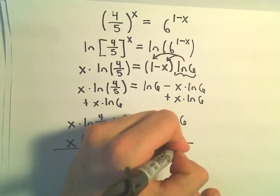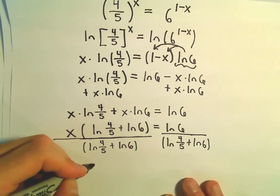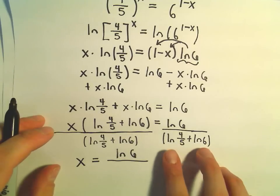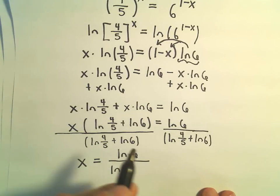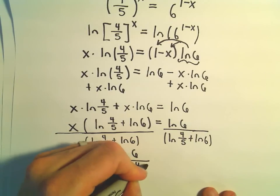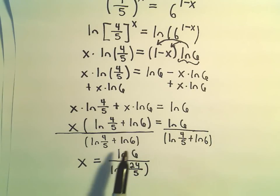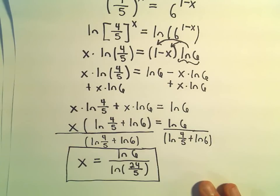Dividing both sides by ln(4/5) plus ln(6), on the left we're just left with x. On the right we have ln(6) over ln(4/5) plus ln(6). We can even combine the logarithm in the denominator — since we have addition, we can multiply the arguments: 4/5 times 6 gives us 24/5. So x equals ln(6) over ln(24/5). You can't combine that into a single logarithm, but if you wanted a decimal approximation you could plug everything in. This is a nice exact answer and we're finished.